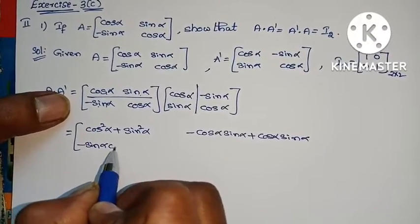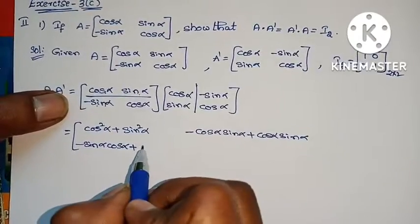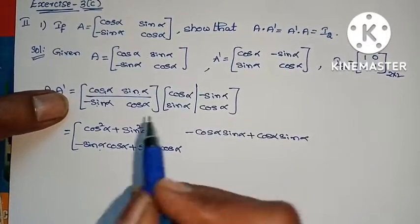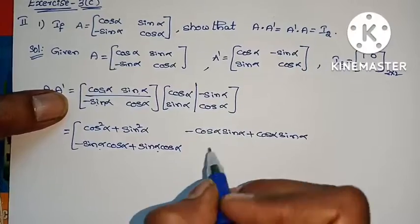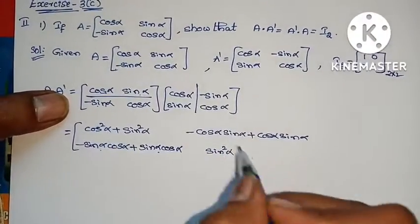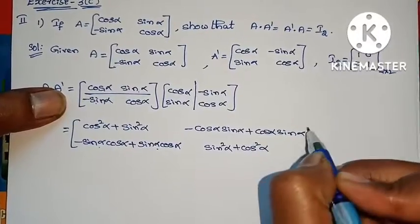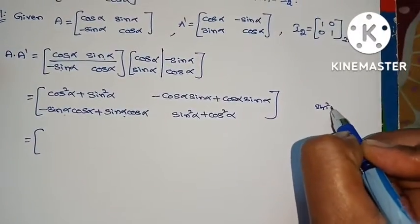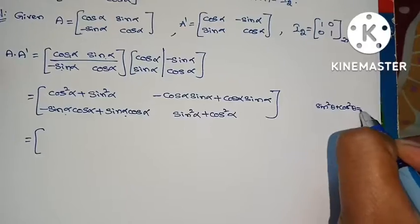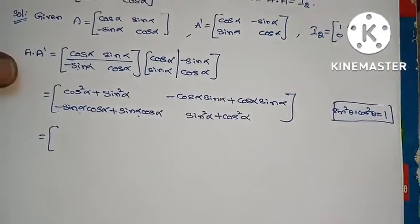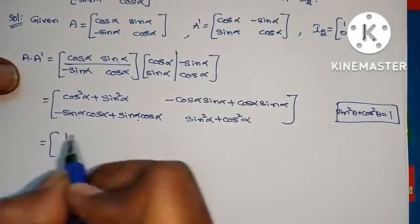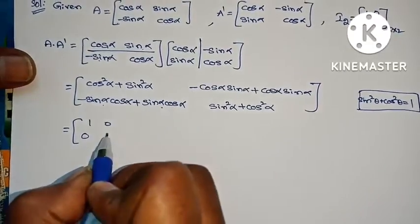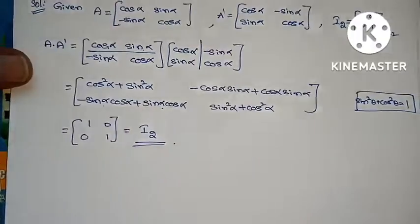Second row, first column: minus sin α × cos α plus cos α × sin α. Second row, second column: sin²α plus cos²α. Using the trigonometric identity sin²θ + cos²θ = 1, this gives us the identity matrix of 2 by 2 order.